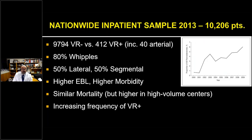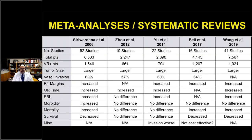A nationwide inpatient sample published about a decade ago included 400 venous resections — including 40 arterial resections — most were Whipples, with higher estimated blood loss, higher morbidity, and similar mortality. Higher mortality was seen at high-volume centers, thought to be due to the arterial resections included. An increasing frequency of venous resection over that 10-year period was noted — almost a tenfold jump. Five meta-analyses and systematic reviews over 15 years, looking at 19 to 50 studies and several thousand patients, represent the best overall data available.